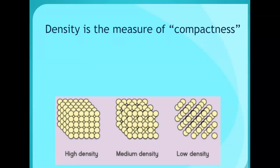Density is a measure of compactness. More compact is high density. Kind of compact is medium density, very less compact is low density.